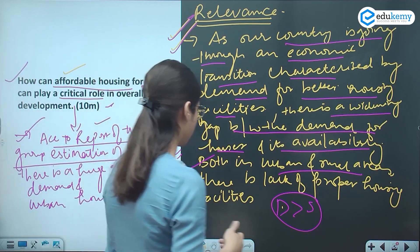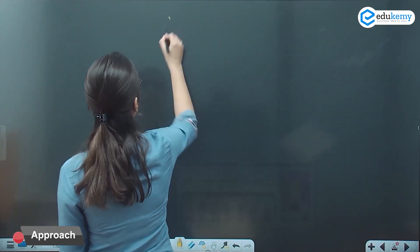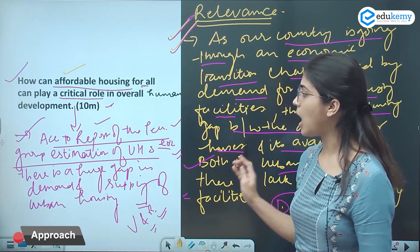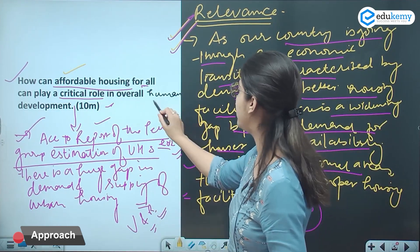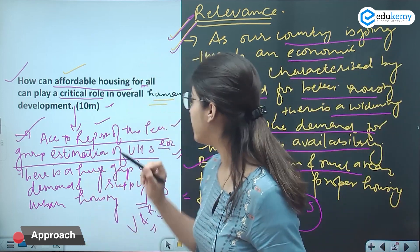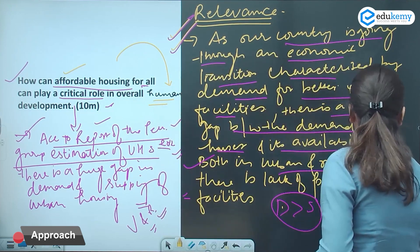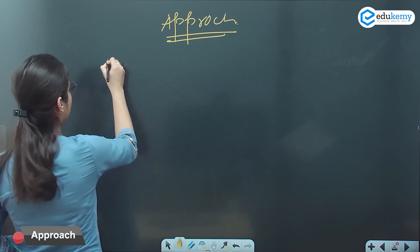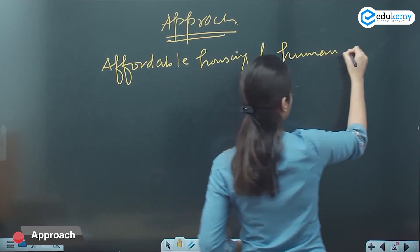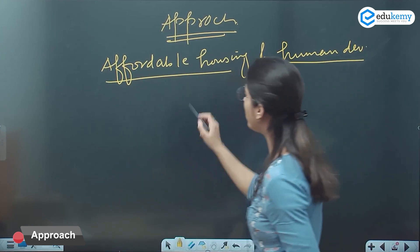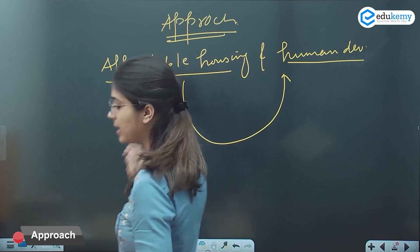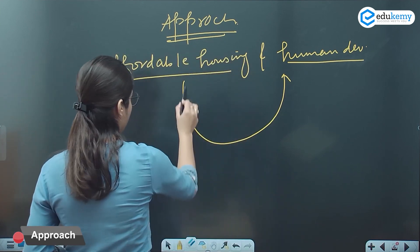Now we are going to discuss the approach. The question asks: how can affordable housing play a critical role in overall human development? So we have to bring a discussion on how affordable housing plays an important role in overall human development. We have to establish a relationship between affordable housing and human development — showing how affordable housing ensures overall human development.